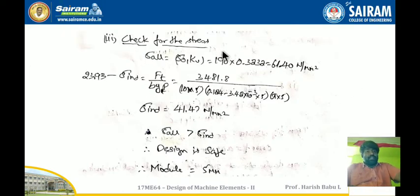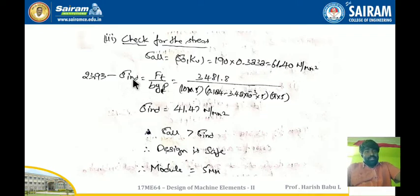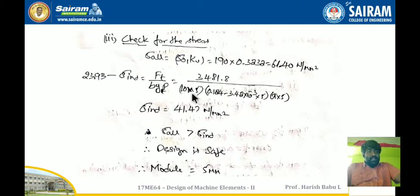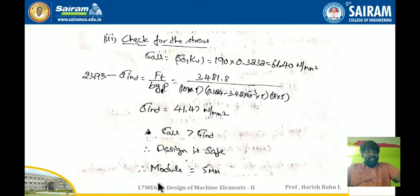Checking whether the selected module is safe: sigma_allowable = σ₀ × KV = 190 × 0.3232 = 61.40 N/mm². For sigma_induced, substituting FT, B = 50 mm, Y1 = 0.124 − 3.14 × 10⁻³ × 5, P = π × 5 into the Lewis equation, I get sigma_induced = 41.47 N/mm². Since sigma_allowable > sigma_induced, the design is safe. Module M = 5 mm is selected.